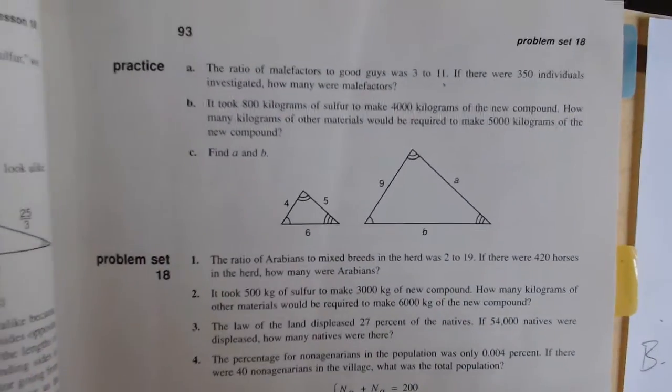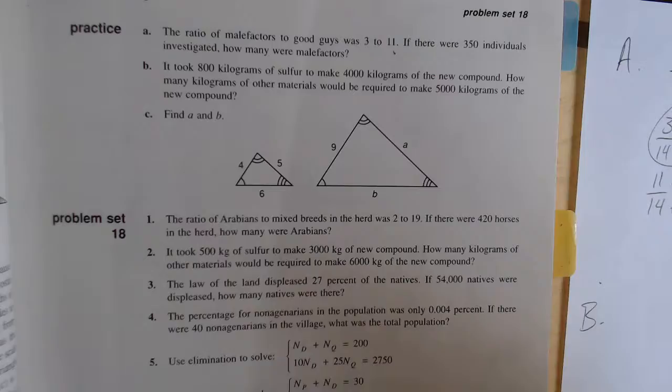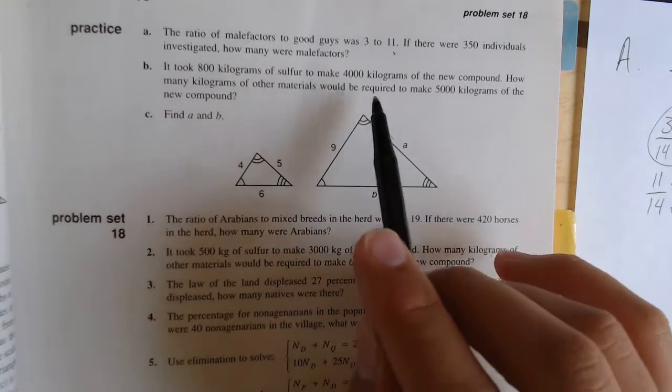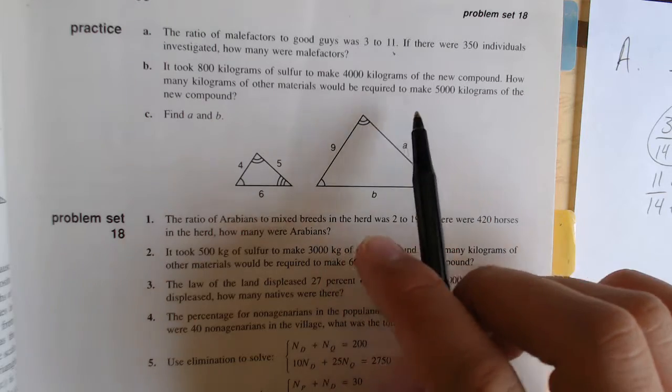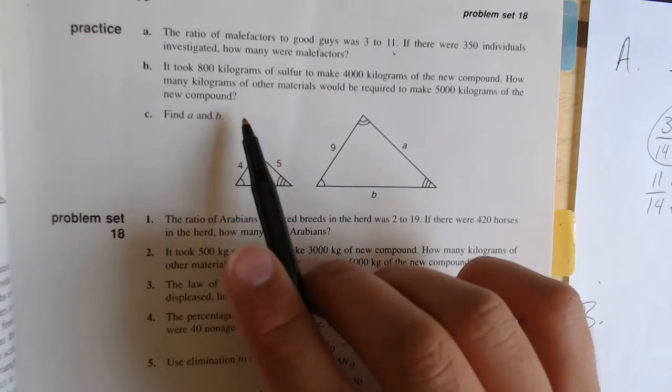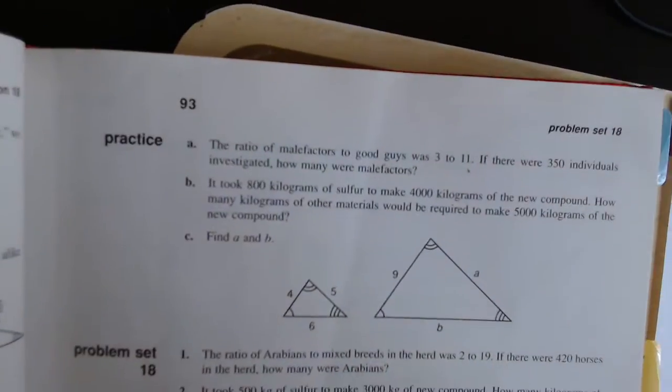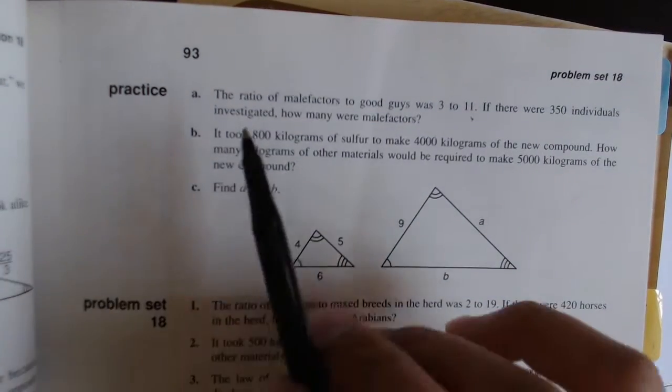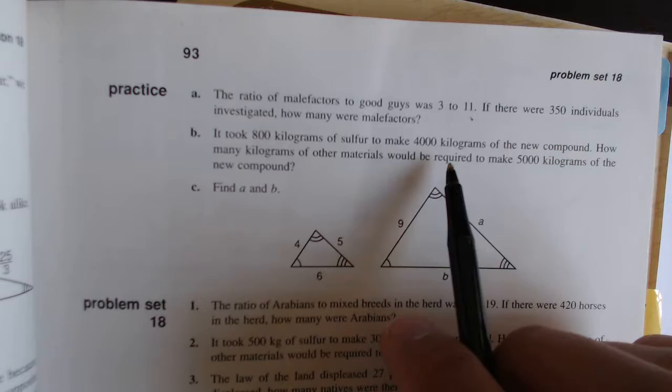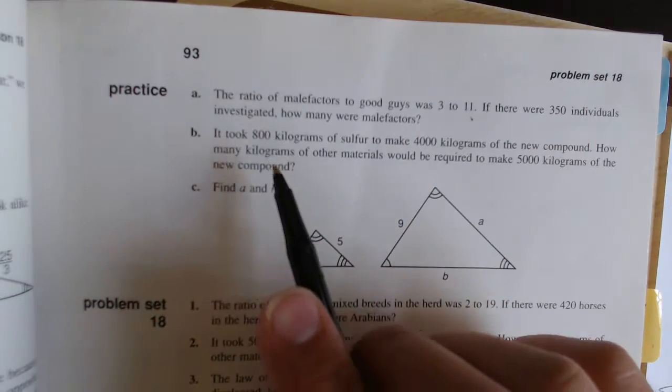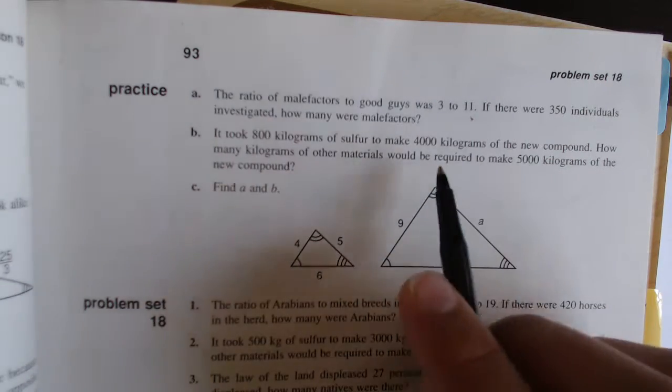Now B can be a little bit more confusing. It took 800 kilograms of sulfur to make 4,000 kilograms of the new compound. How many kilograms of other material would be required to make 5,000 kilograms of the new compound? So let's start with this first sentence and pull our three ratios out. They say it took 800 kilograms of sulfur to make 4,000 kilograms of the new compound. So what they tell us here is one part and the whole.